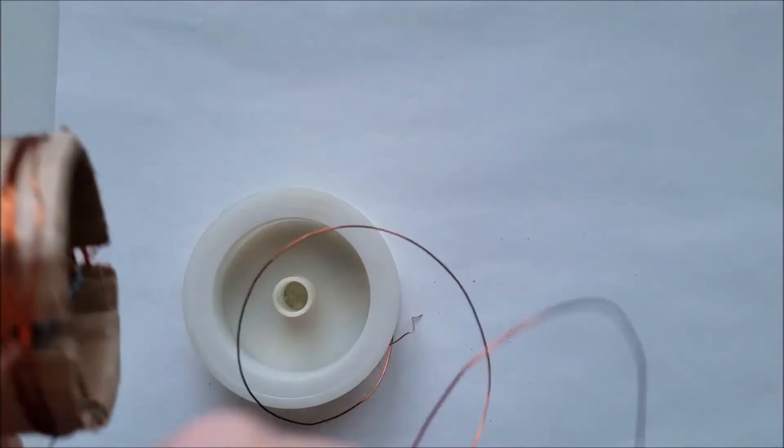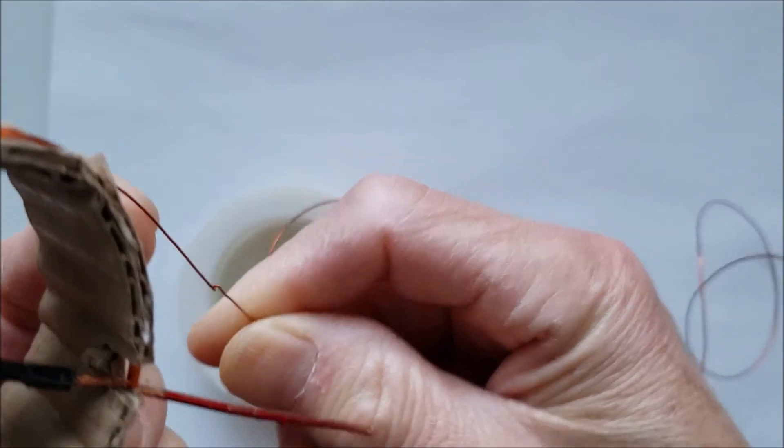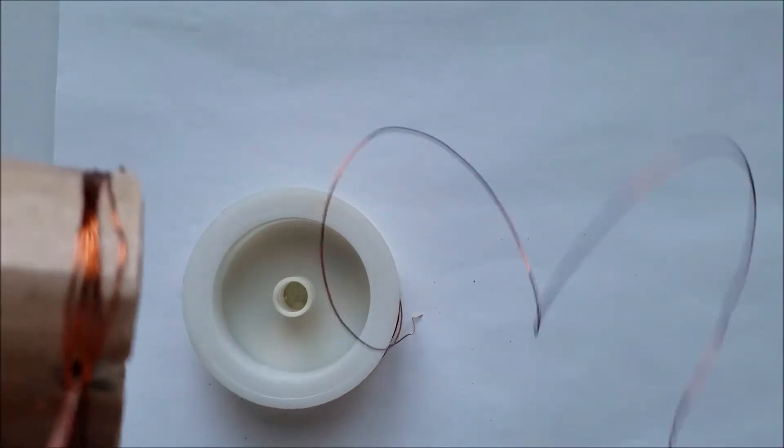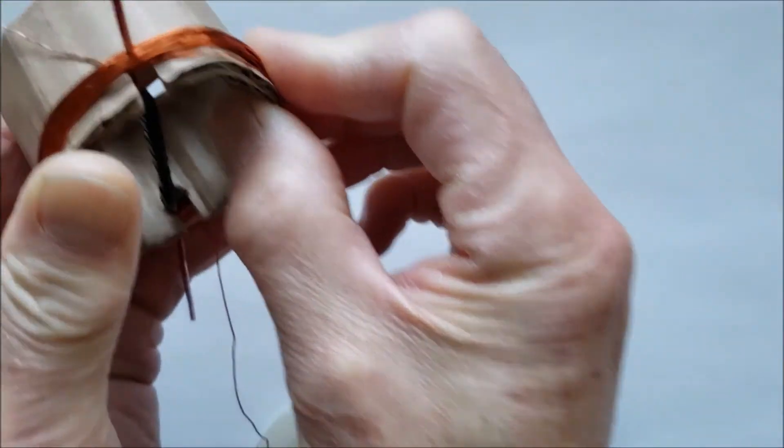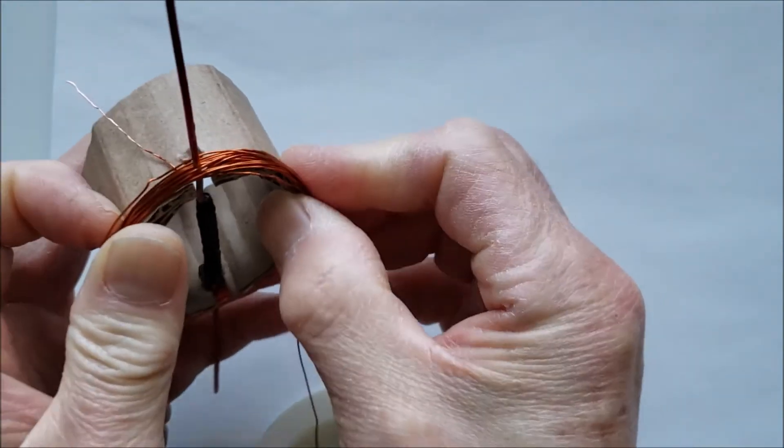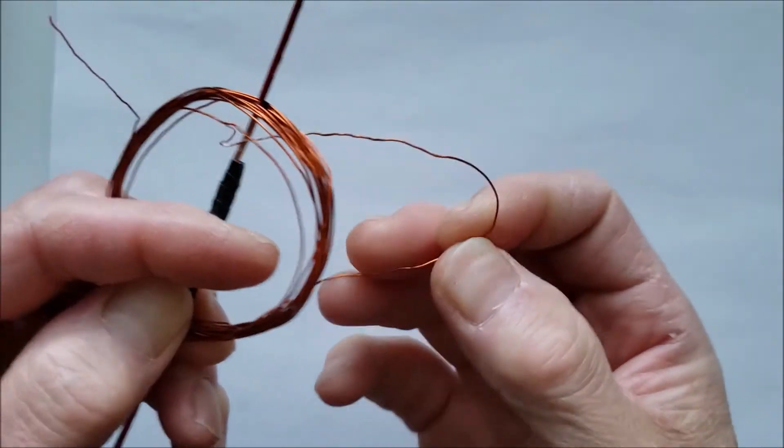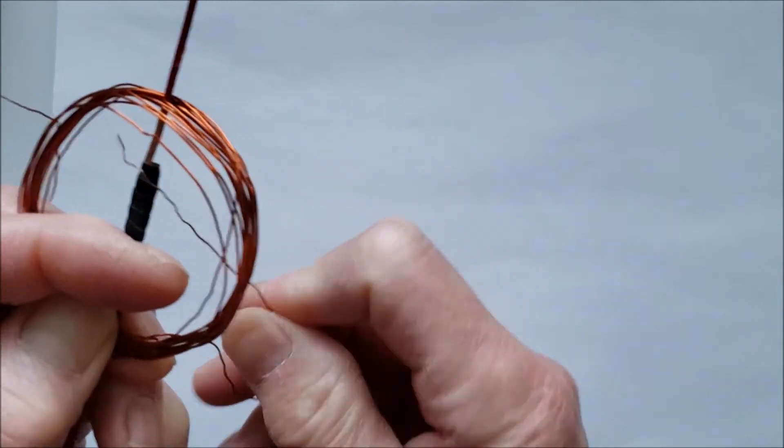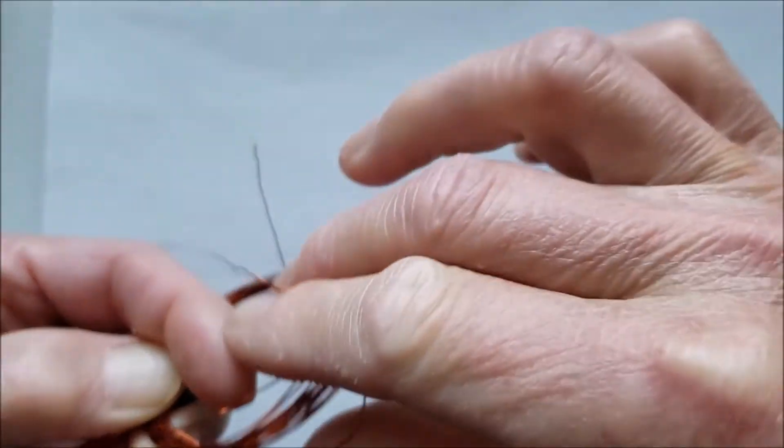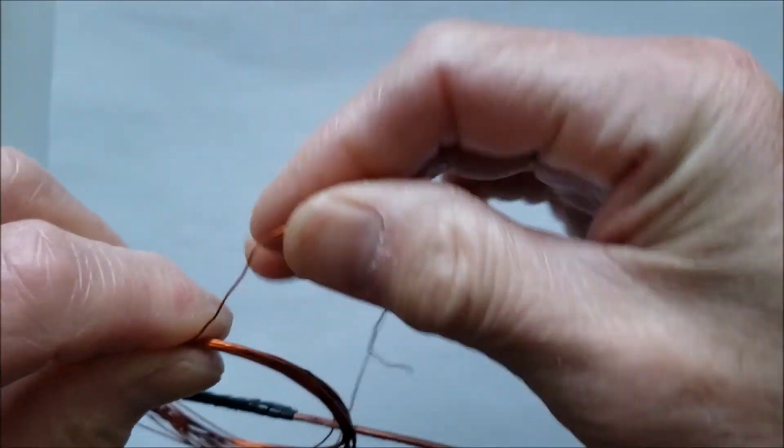Make at least 20 turns, then cut off the magnet wire and slip the coil off the tube. Use the loose ends of the magnet wire to wrap the strands together and to tie the coil to the shaft.